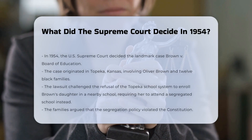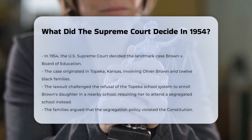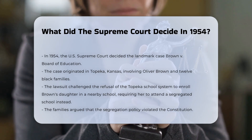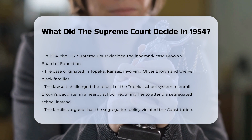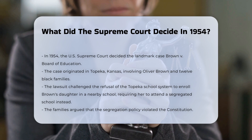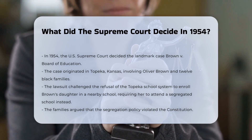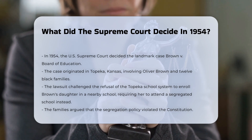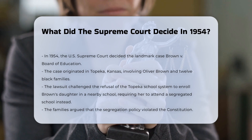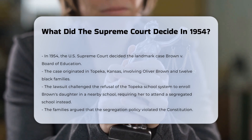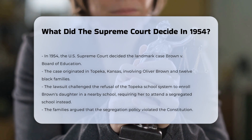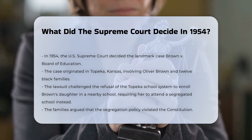In 1954, the U.S. Supreme Court heard a landmark case that would change the course of American history. This case, known as Brown v. Board of Education, originated in Topeka, Kansas, where Oliver Brown and 12 other Black families filed a class-action lawsuit against the Topeka Board of Education. The lawsuit was sparked by the refusal of the Topeka public school system to enroll Oliver Brown's daughter in the school closest to their home, instead requiring her to attend a segregated Black school farther away.